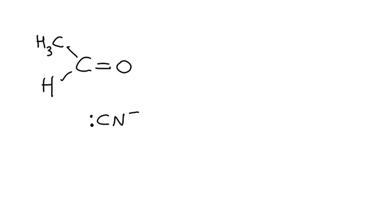The cyanide ion has a lone pair of electrons, and this lone pair will attack the electron-deficient delta-positive carbon. At the same time, the pi electrons will move onto the oxygen atom.